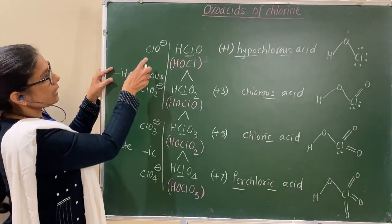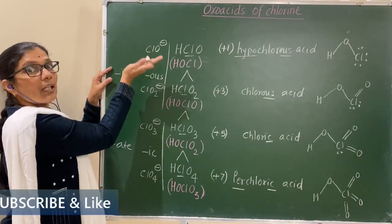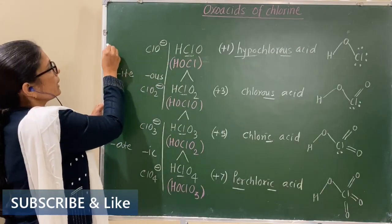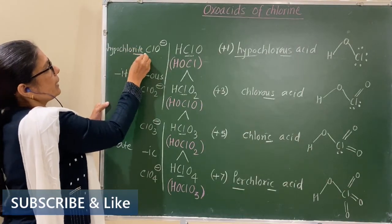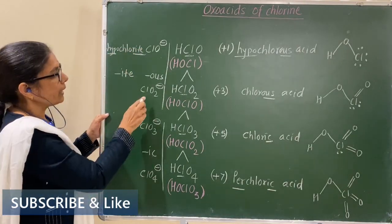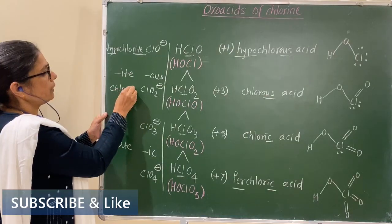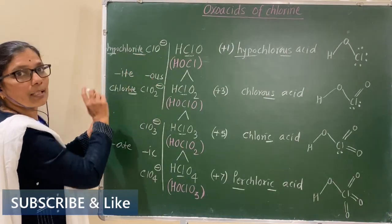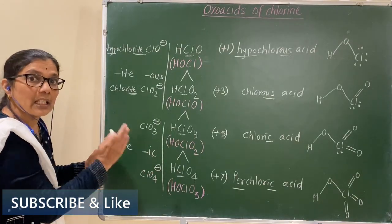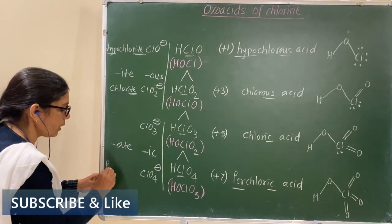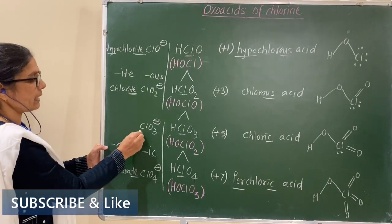Now, you can see, both these are 'ite'. And that, the lower number of oxygen is hypo 'ite'. That is, it is hypochlorite. Then, this is only chlorite. Next, both these are 'ate'. In that, the highest one is per 'ate'. That is, this is perchlorate. And this is chlorate only.